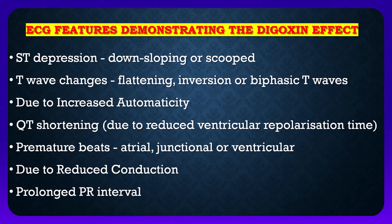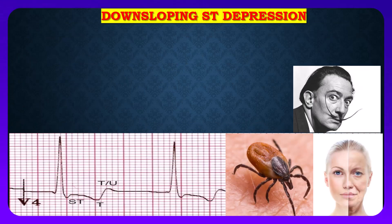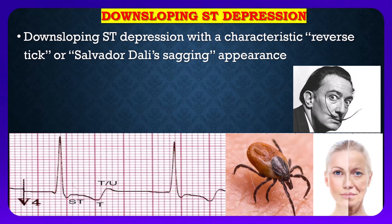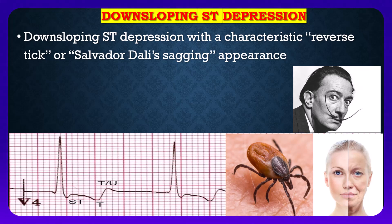Let's discuss them one by one. Down-sloping ST depression with a characteristic reverse tick, or Salvador Dalí sagging appearance. If you will see the leg-up tick, it looks like ST depression with digoxin medication, or it may look like the moustache of Salvador Dalí, the well-known personality known for his moustache style.